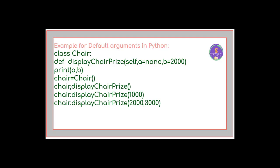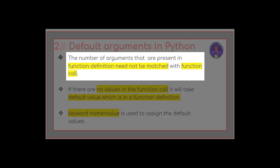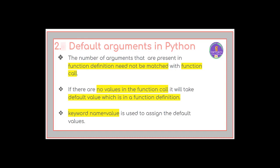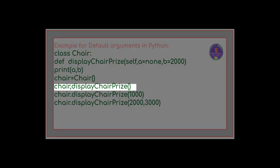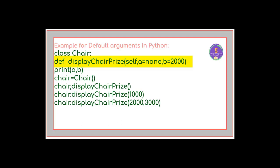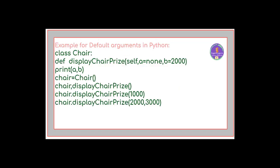It has three arguments: self, a, and b. Self is the default argument; a and b are user-defined arguments. We are calling this function with only one argument, but in the function definition there are three arguments. If there are no values in the function call, it will take the default value from the function definition. The keyword syntax 'name=value' is used to assign default values — so 'a' is a keyword and 'None' is its value, and 'b' is a keyword with value 2000.